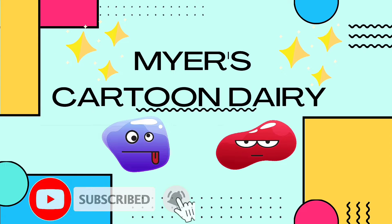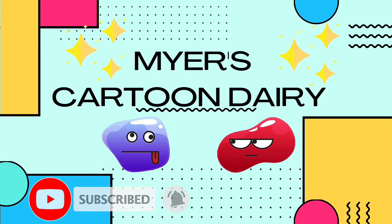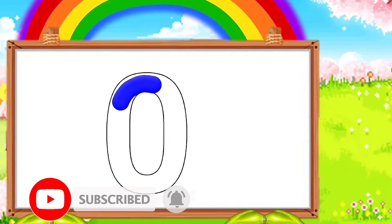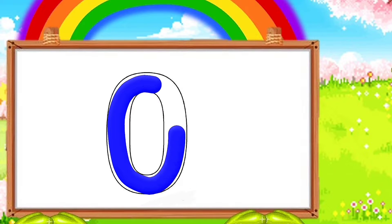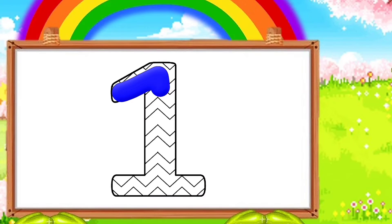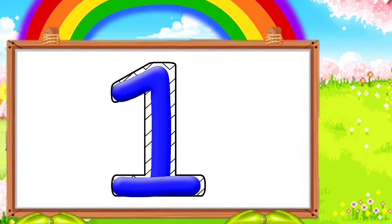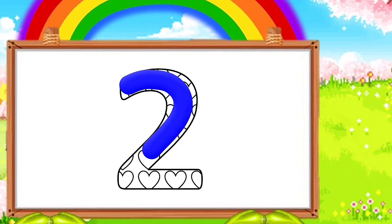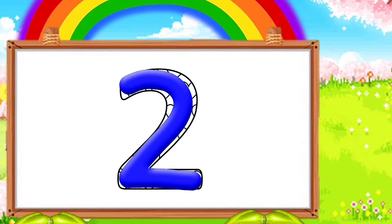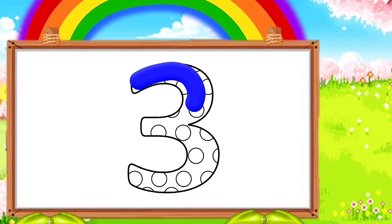Let's start with the numbers. How to write? Zero. One. Two. Three.